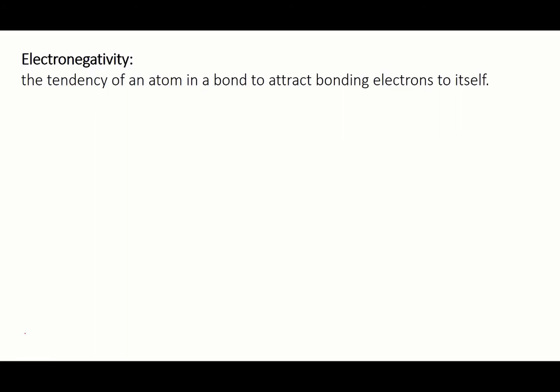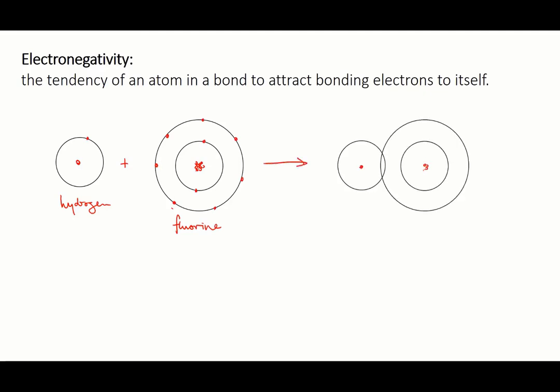A quick refresher on bonding. When a covalent bond forms between two atoms, two bonding electrons are shared between them. Just as in an individual atom there is an electrostatic attraction between the negative electrons and the positive nucleus, so in a covalent bond between two atoms, the bonding electrons are electrostatically attracted to the nuclei of both the atoms in the bond.